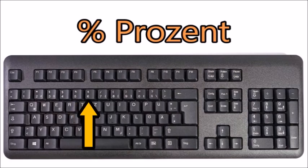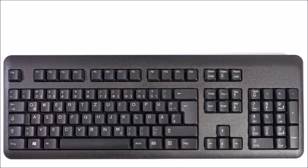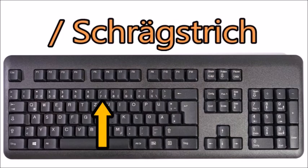Shift+6 is the ampersand — in German it is called Und-Zeichen or At-Zeichen, because it comes from the Latin word 'et' meaning 'and.' However, At-Zeichen isn't used that much anymore because it can easily be confused with the email symbol that is also called that. Shift+7 is the slash, called Schrägstrich.